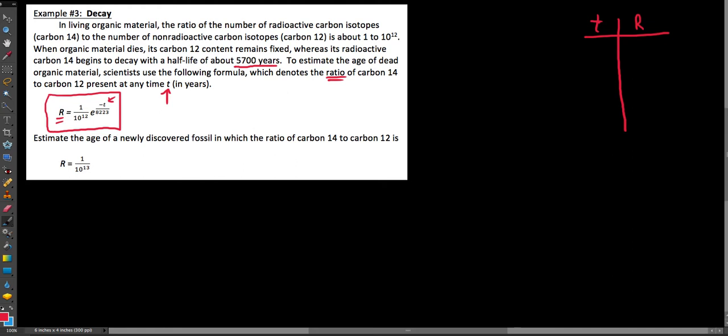So seeing what this model is really relating now and looking at the question down here, it says estimate the age. In other words, what are we looking for here, time or ratio? It says estimate the age. We're looking for time. And it says of a newly discovered fossil in which the ratio of carbon-14 to carbon-12 is this. And so what they're doing is they're giving us this r value here. And this is quite a small r value. We're going to say that r is 1 over 10 to the 13th power, which is crazy small. But if this is our ratio, how are we going to find the time?